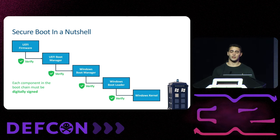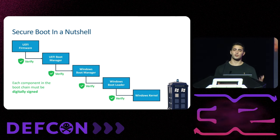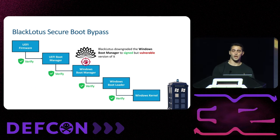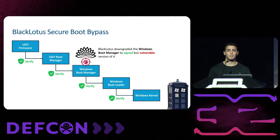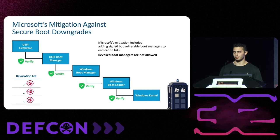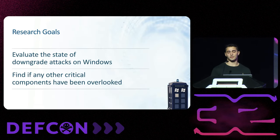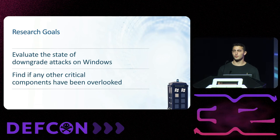To understand how Black Lotus's downgrade bypassed secure boot, you first need to know what secure boot is. Simply put, secure boot verifies that each component in the boot chain is digitally signed — if you are not signed, you are not loaded. Black Lotus downgraded the Windows boot manager to a signed but vulnerable version, then exploited a null vulnerability in that version to bypass secure boot. Microsoft's mitigation included revoking vulnerable boot managers. But the critical question is: are there other components vulnerable to downgrade attacks beyond secure boot?